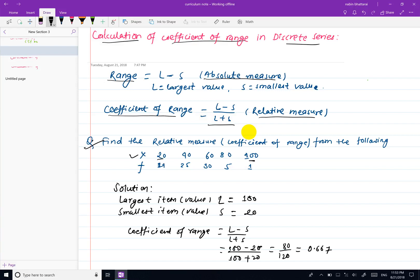The coefficient of range formula uses the largest item and smallest item values. This is how you calculate the coefficient of range for discrete series.